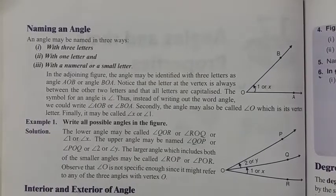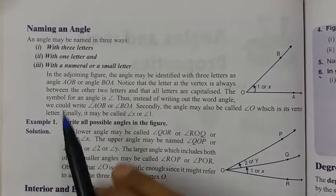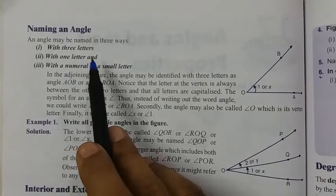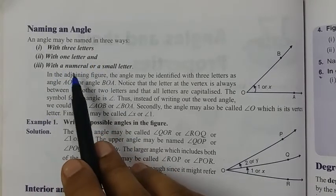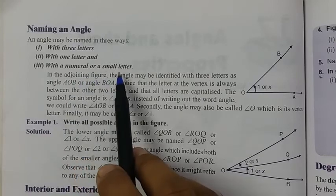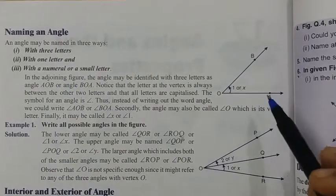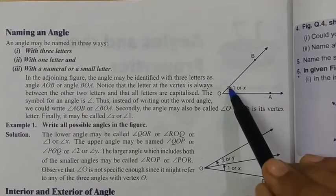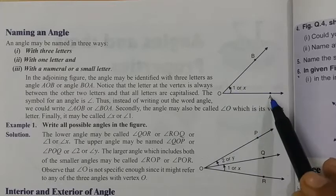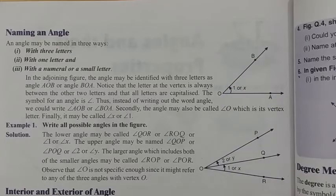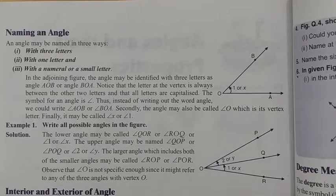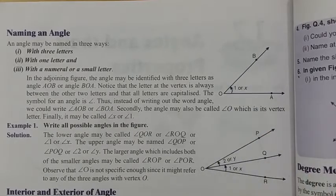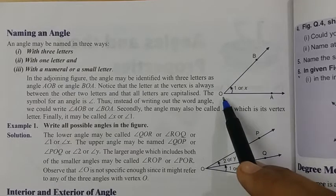For example, in this figure, an angle is formed. If we want to indicate this angle, we can write angle AOB, or simply we can say angle X, or angle 1, or angle O.